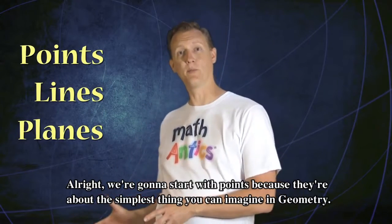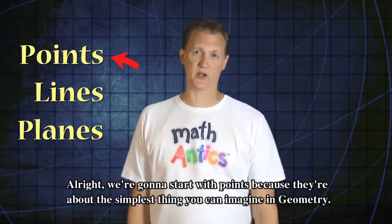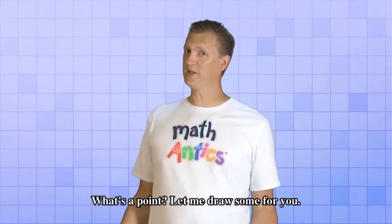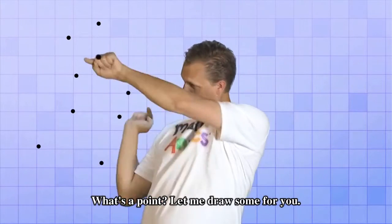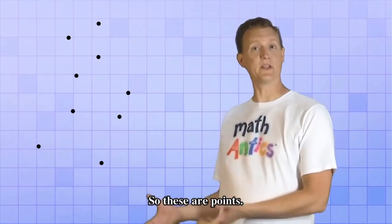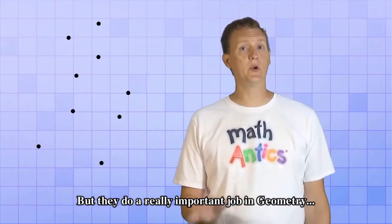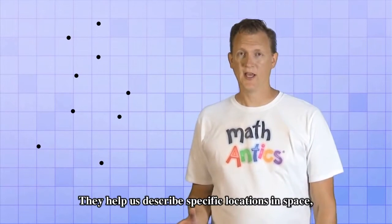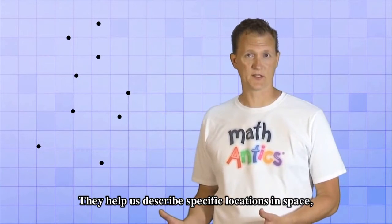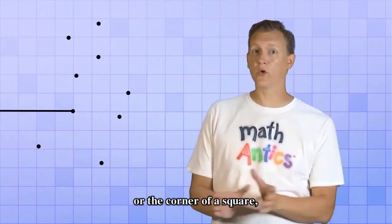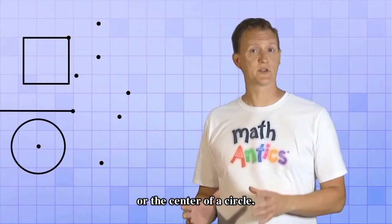Alright, we're going to start with points because they're about the simplest thing you can imagine in geometry. What's a point? Well, let me draw some for you. So these are points. They're just little tiny dots in space, but they do a really important job in geometry. They help us describe specific locations in space, like the end of a line, or the corner of a square, or the center of a circle.